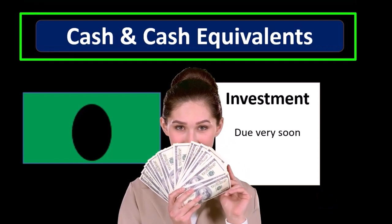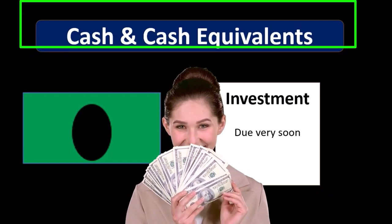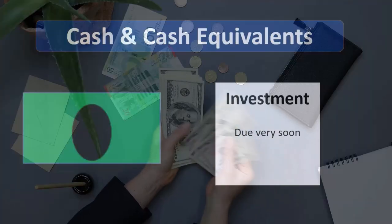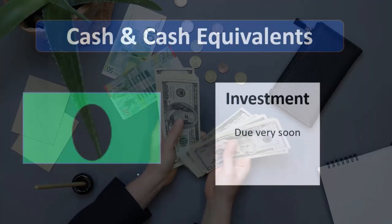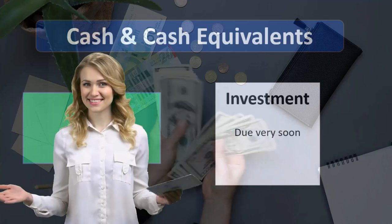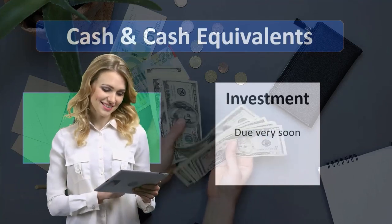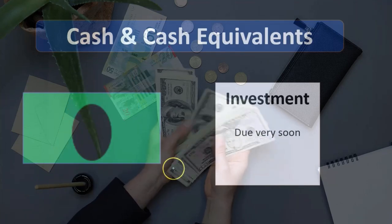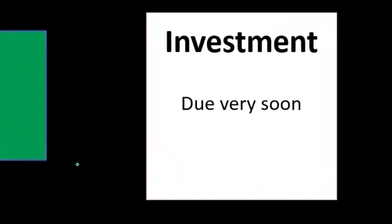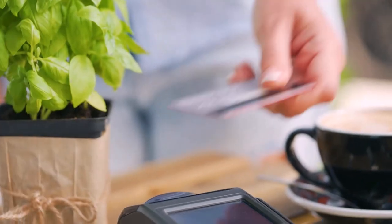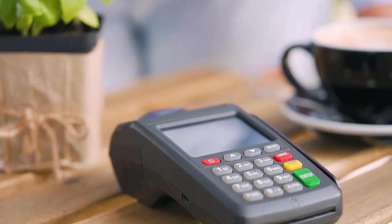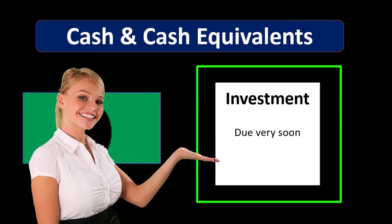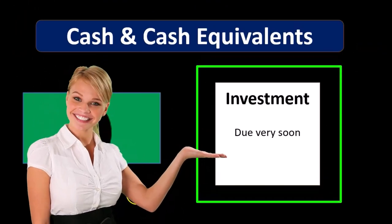Cash is going to be anything that is really liquid — something we're going to be able to pay off our short-term obligations with. We typically think of cash as physical cash or funds in our bank or checking account. Cash equivalents are things that are due really soon — investments we can access and use to pay off accounts very quickly. If we have a long-term constraint on an investment, we would not call it a cash equivalent.